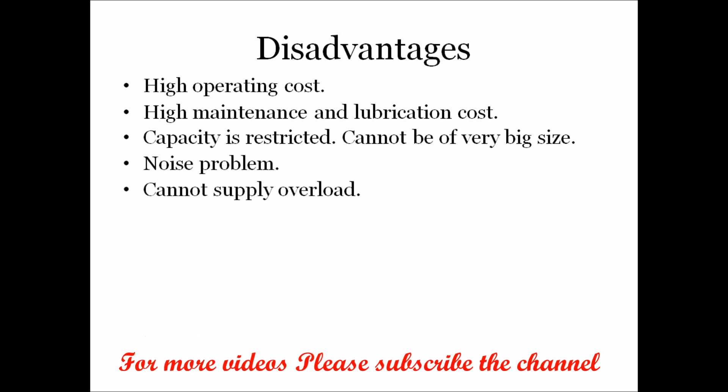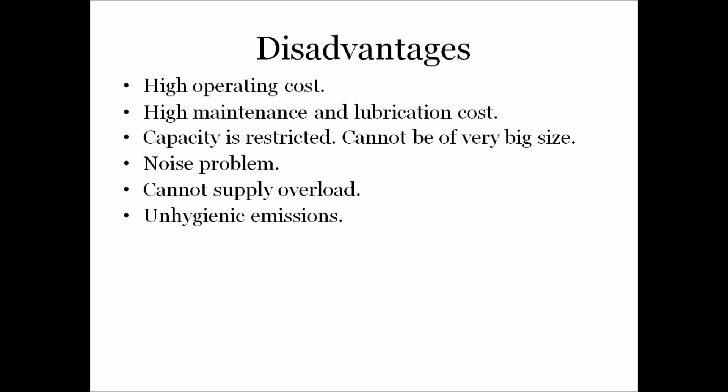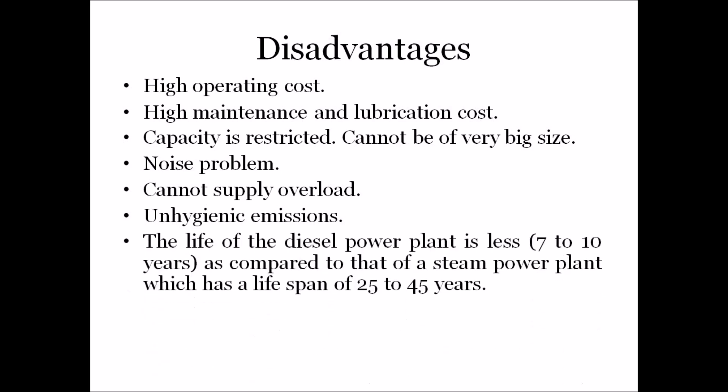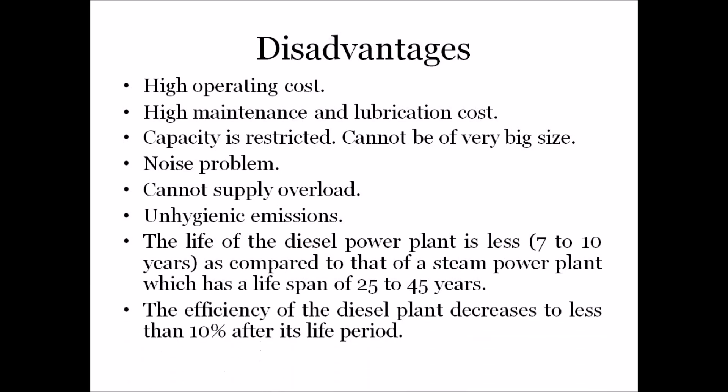These plants cannot supply overload. There are unhygienic emissions, meaning the operation releases some poisonous gases into the environment. The life of a diesel power plant is less — only around 7 to 10 years — as compared to a steam power plant, which has a lifespan of 25 to 45 years. The main disadvantage is that the efficiency of the diesel power plant decreases to less than 10 percent after its life period.